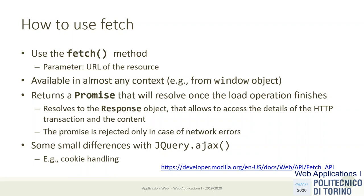The fetch API is composed of essentially one function called fetch — it's a method in the global window space. In its minimal form it takes one parameter: the URL of the resource we want to request. If we want to call a GET endpoint, we use fetch with the URL of the API address, and that will start an asynchronous request.